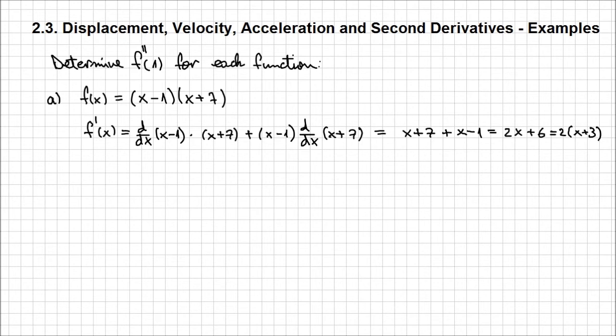But we need to derivate this expression, so the second derivative for f of x is going to be d/dx of 2 times x plus 3. So we have this constant multiple, if you wish, coming out of the derivative, and it's going to be 2 times d/dx of x plus 3, and the derivative of this linear function is just 1. So the result is going to be 2.